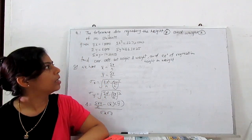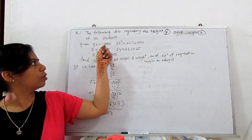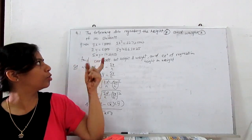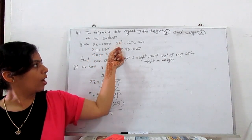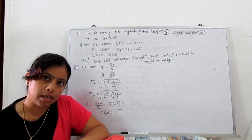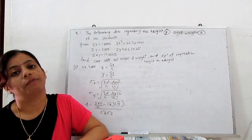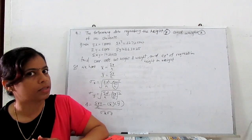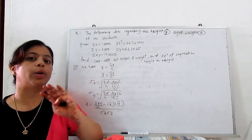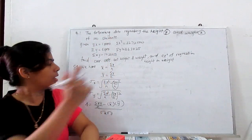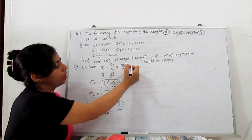Example 1: The following data regarding the height (y) and weight (x) of 100 students is given: summation of x = 15,000, summation of y is the height total. We need to find the correlation coefficient between height and weight and the equation of the regression line of height on weight (y on x). The mean x̄ = summation x / n = 15,000 / 100 = 150.